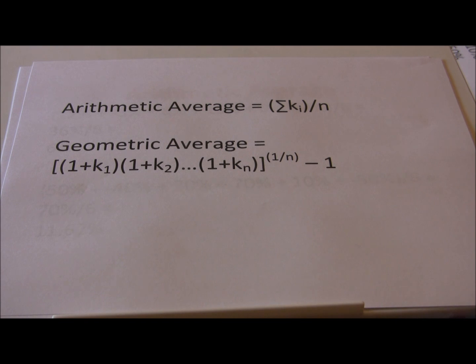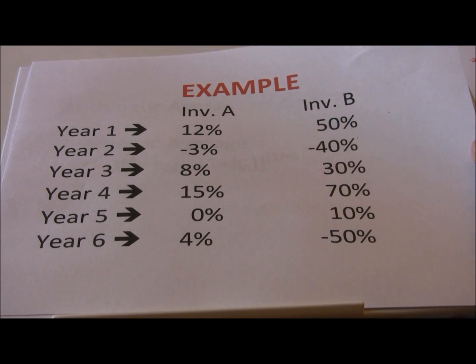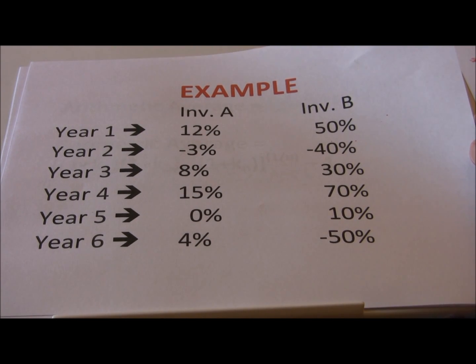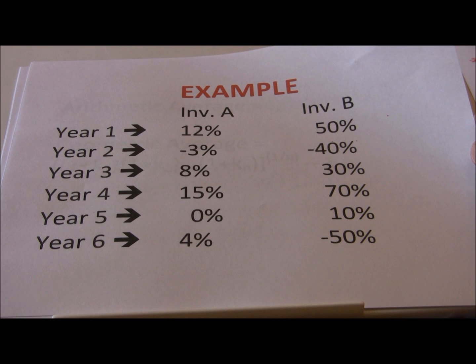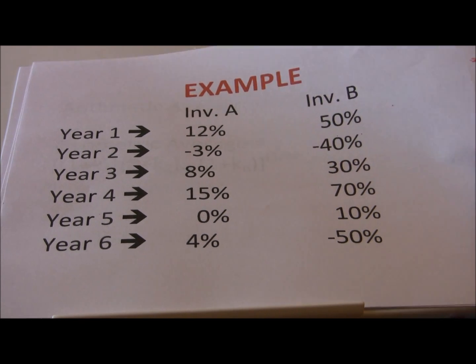Now the easiest way to go through this is to walk through an example. We're going to start with arithmetic averages and then go through geometric averages. We're going to go back to that example that we introduced of our two investments, A and B. We're going to calculate the arithmetic average and geometric average return for both of these investments.